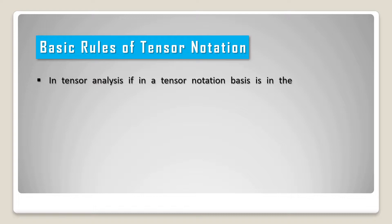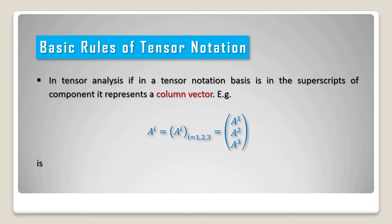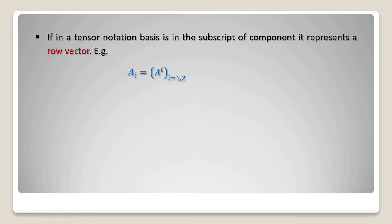In tensor analysis, if a tensor notation basis is in the superscript of a component, it represents a column vector. For example, a superscript i is a column vector in 3D space whose basis are 1, 2, 3. If a tensor notation basis is in the subscript of a component, it represents a row vector. For example, a subscript i is a row vector in 3D space whose basis are 1, 2, 3.